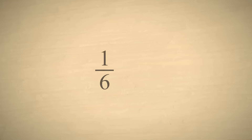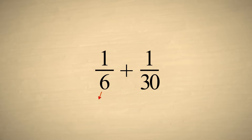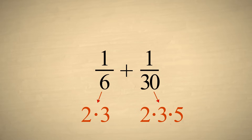As an example, let's say that we want to add one-sixth and one-thirtieth. We must make the denominators of these fractions the same so that we can add their numerators. If we factor each denominator, we can write each of them as a product of prime numbers.